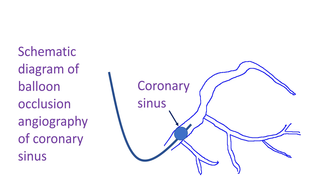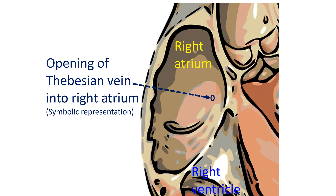The veins visualized in a coronary angiogram levophase will also depend on the coronary artery in which contrast is injected. Coronary venous circulation has been divided into a greater cardiac venous system, which drains into the coronary sinus, and a smaller cardiac venous system, which drains into cardiac chambers. The smaller cardiac venous system is constituted mainly by the Thebesian veins.